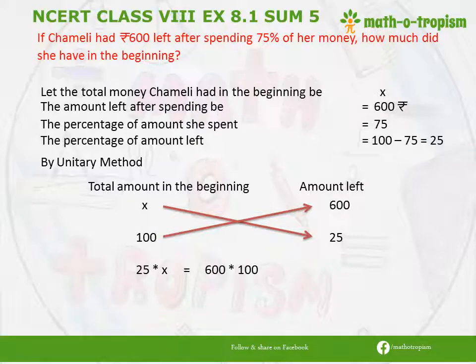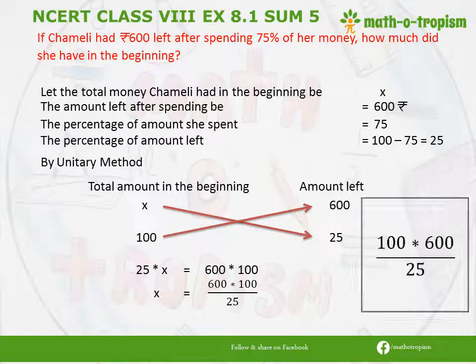We keep X on the left hand side and bring 25 down, so it becomes 600 × 100 divided by 25. Since it was in multiplication on the LHS, it goes to division on the RHS. We will now simplify 100 × 600 by 25. We know that 100 and 25 are both multiples of 5 because the last digits are 0 and 5, so it is divisible by 5.